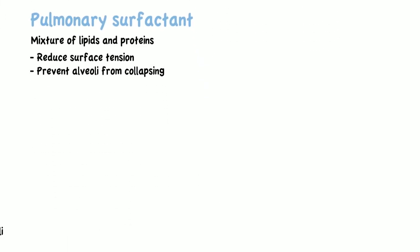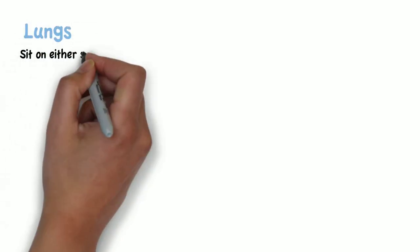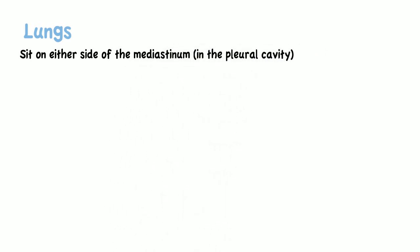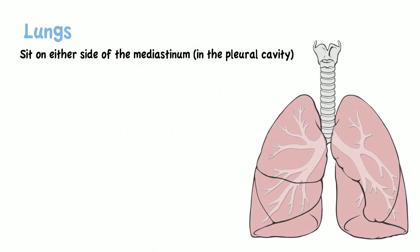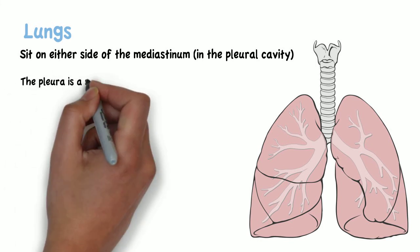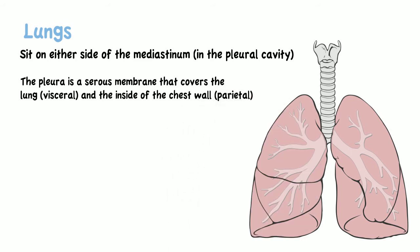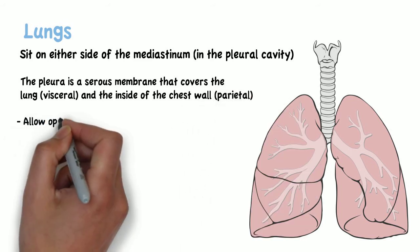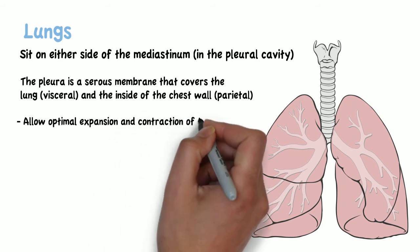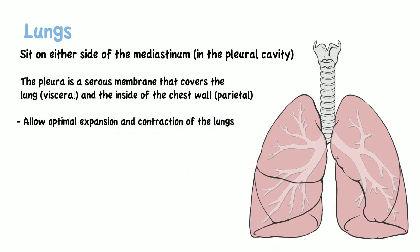Bronchi, bronchioles, and alveoli are all part of the lungs. The lungs sit on either side of the mediastinum in the pleural cavity, which is formed by the visceral and parietal pleura. The pleura is a serous membrane that covers the lungs and the inside of the chest wall, allowing optimal expansion and contraction of the lungs during breathing. Pleural fluid acts as a lubricant, allowing the parietal and visceral pleura to glide over each other friction-free. This fluid is produced by the pleural layers themselves.